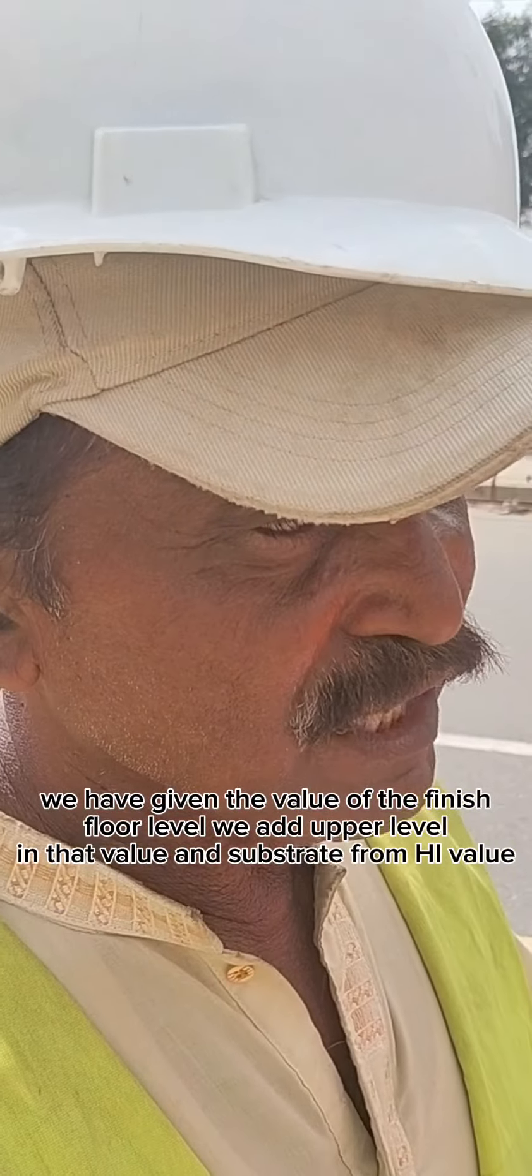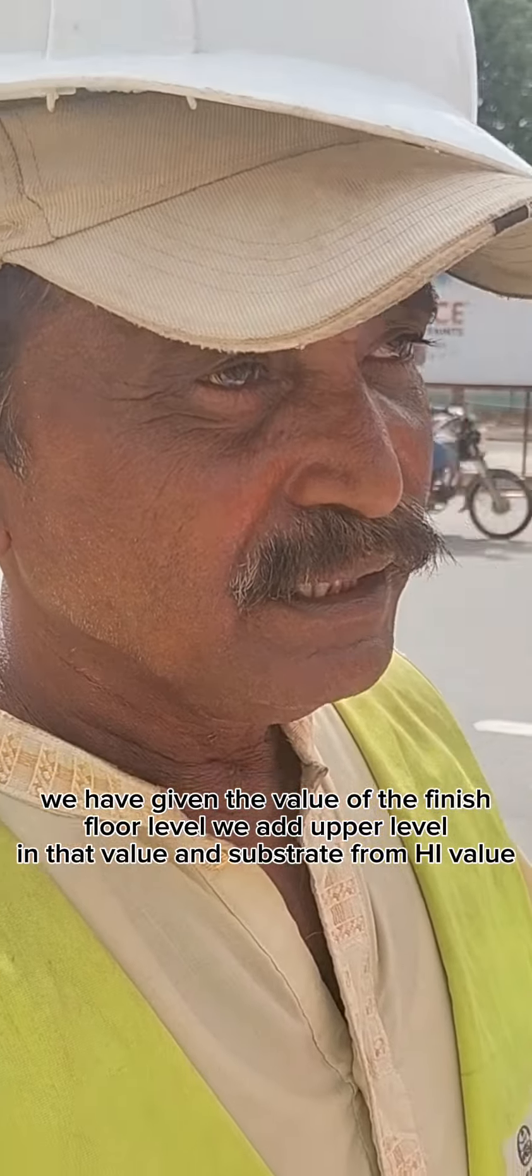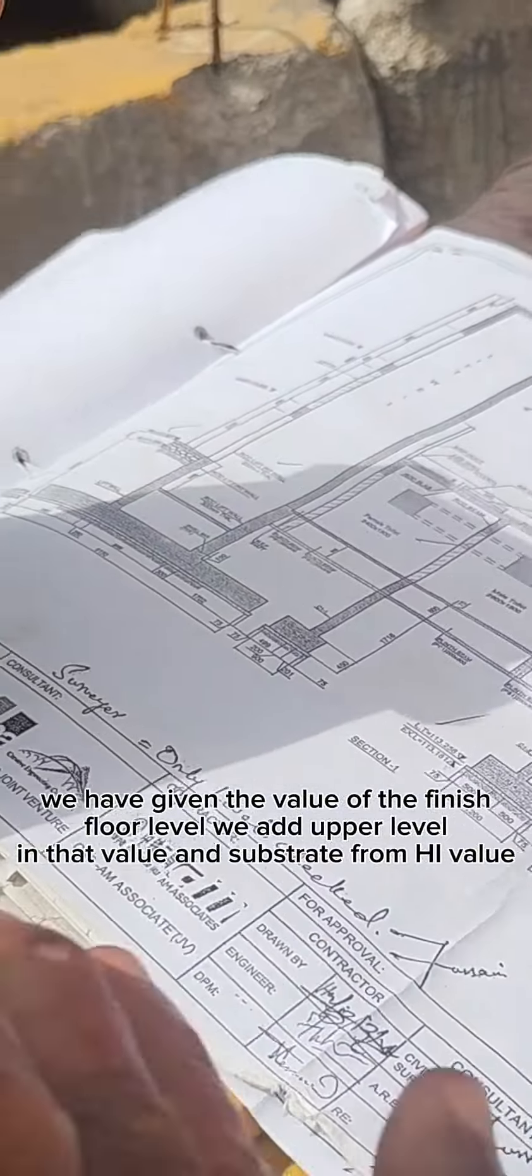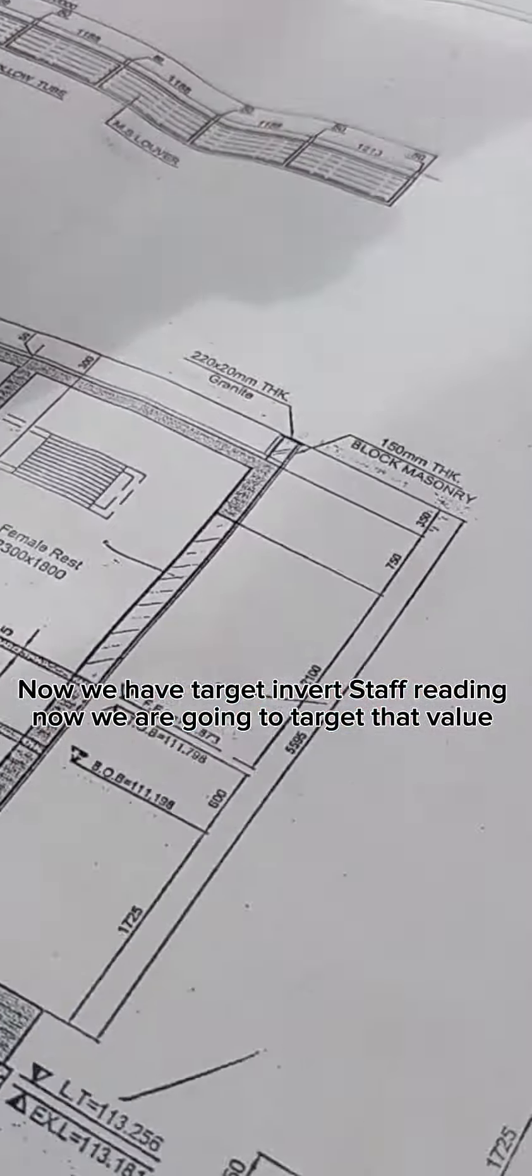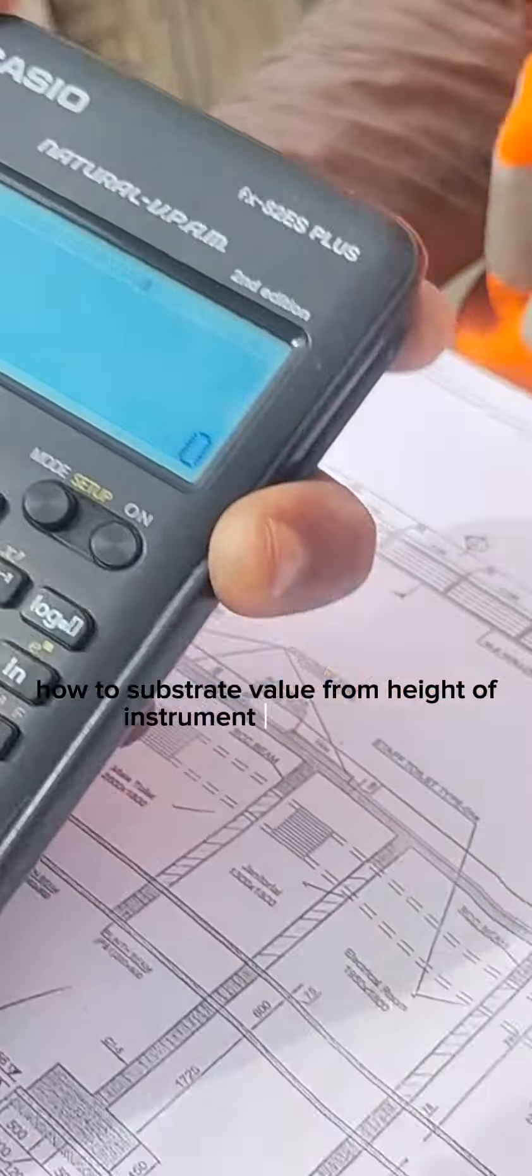We have given the value of the finish floor level. We add upper level in that value and subtract from HI value. Now we have target InvertStaff reading. Now we are going to target that value, how to subtract value from height of instrument.